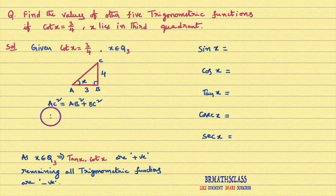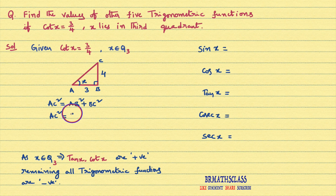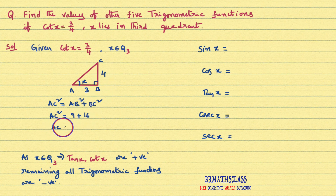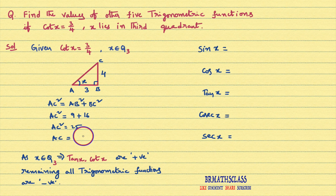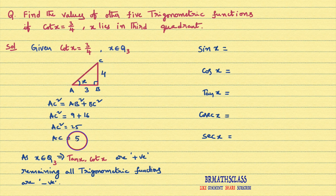From Pythagoras theorem, hypotenuse square equals the sum of squares of the other two sides. AC square equals AB square plus BC square. AB is 3, so AB square is 9. BC is 4, so BC square is 16. Therefore AC square equals 25, so AC equals plus or minus 5. But since AC is a distance, it is always positive, so we take AC equal to 5.